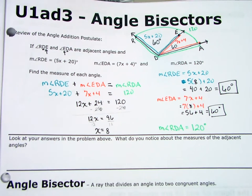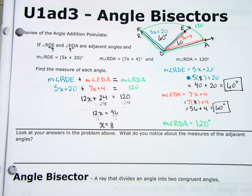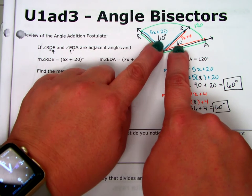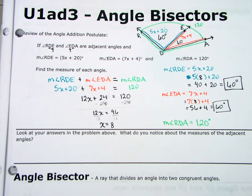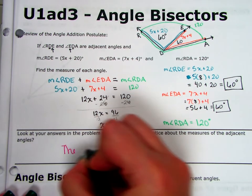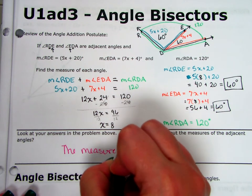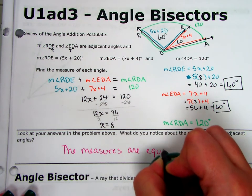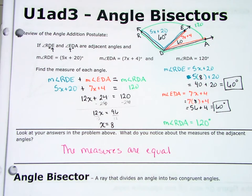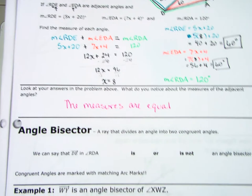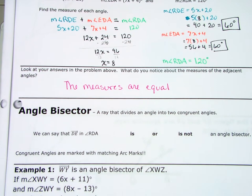The next question says: look at the answers in the problem above — what do we notice about the measures of the two adjacent angles? They have equal measures. The measures are equal. That's going to bring us to our first vocabulary word of the day: angle bisector. An angle bisector, just like a segment bisector divides a segment exactly in half, divides an angle exactly in half. An angle bisector is a ray that divides an angle into two congruent angles.